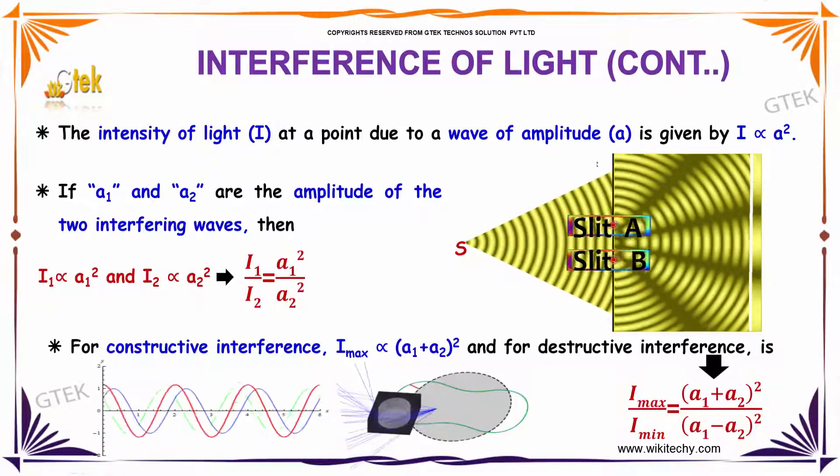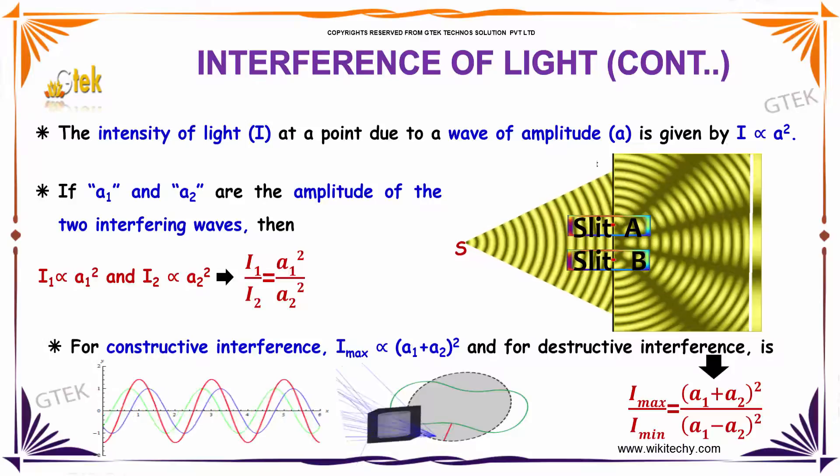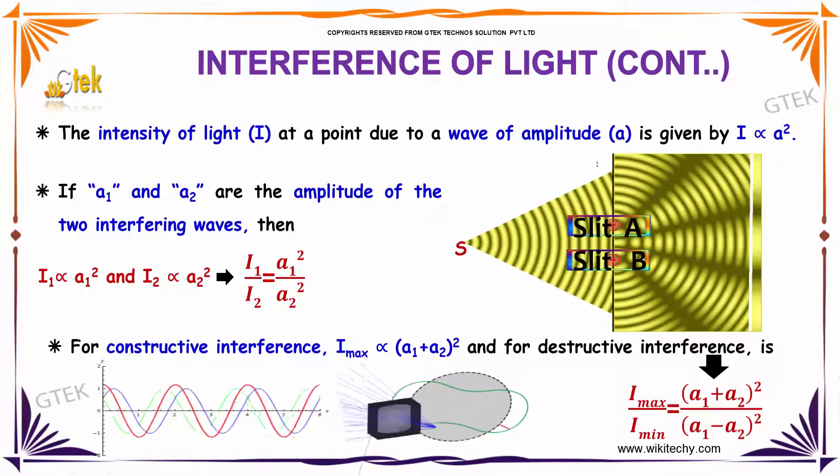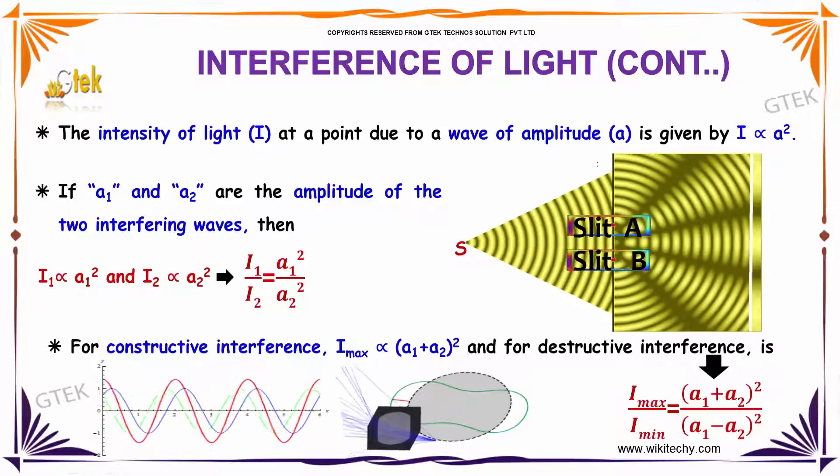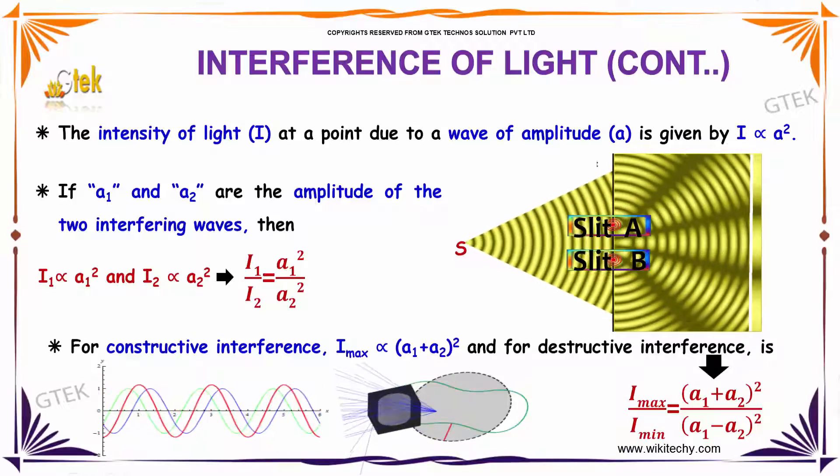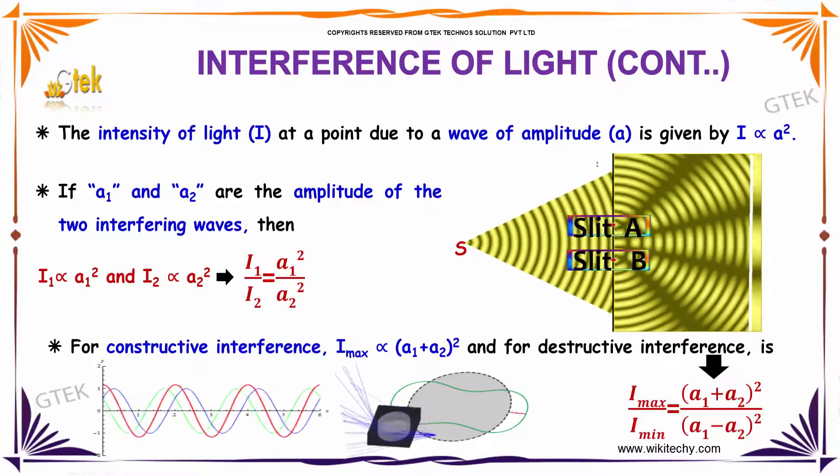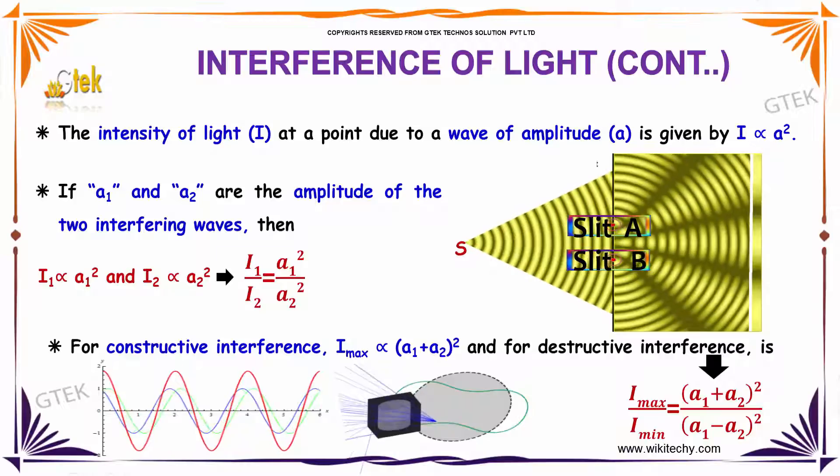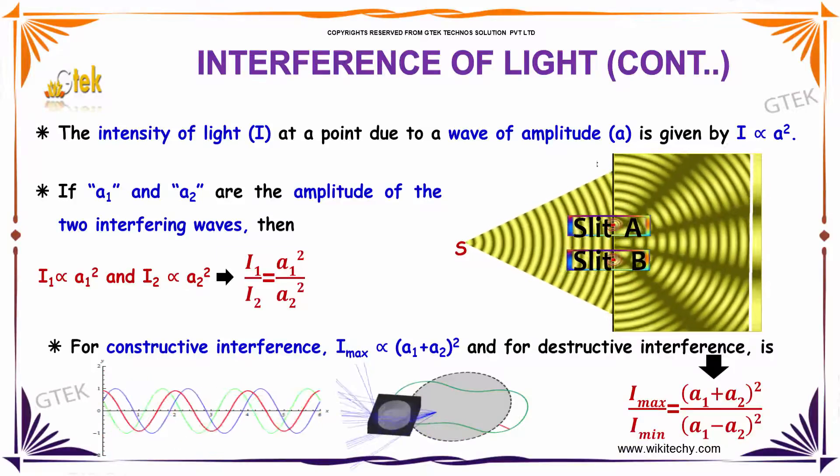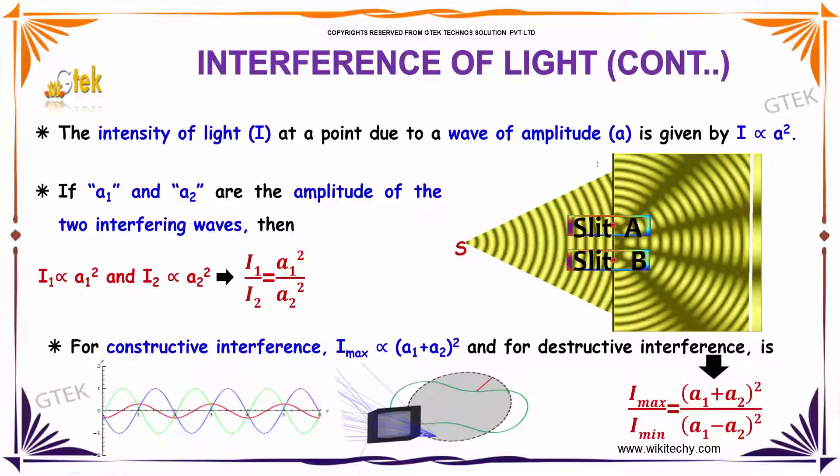The intensity of light at a point due to a wave of amplitude A is given by I directly proportional to A square. If A₁ and A₂ are the amplitude of two interfering waves, then the intensity is I₁ directly proportional to A₁ square and I₂ directly proportional to A₂ square. So, I₁ divided by I₂ is equal to A₁ square divided by A₂ square.